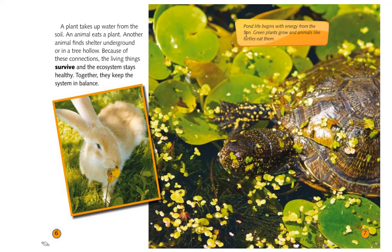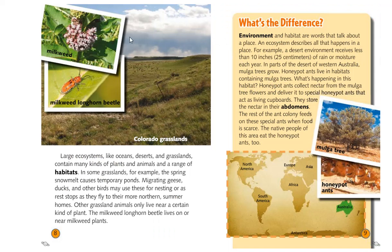Pond life begins with energy from the sun. Green plants grow and animals, like turtles, eat them. Large ecosystems, like oceans, deserts, and grasslands, contain many kinds of plants and animals and a range of habitats, or places where these living things can live.